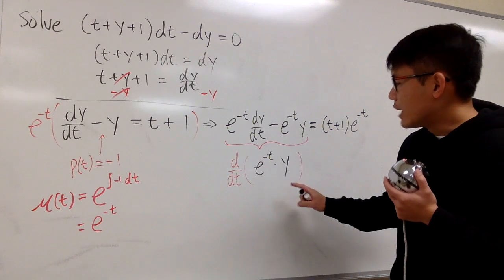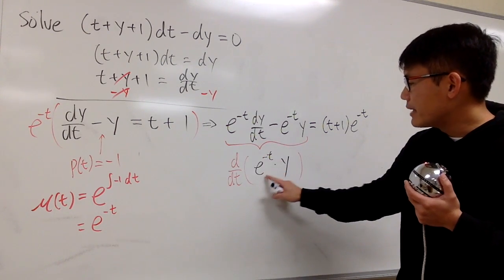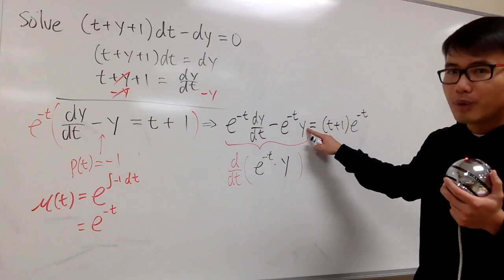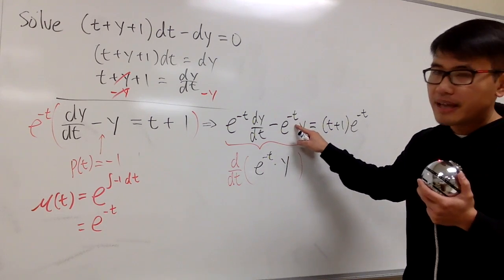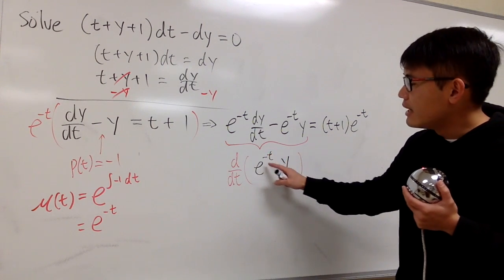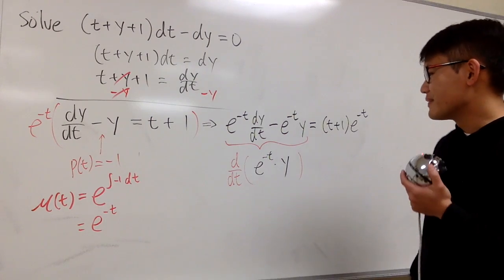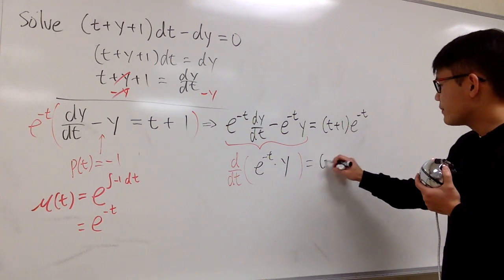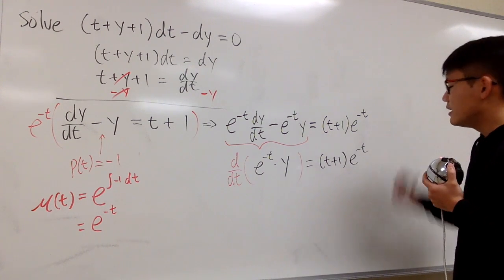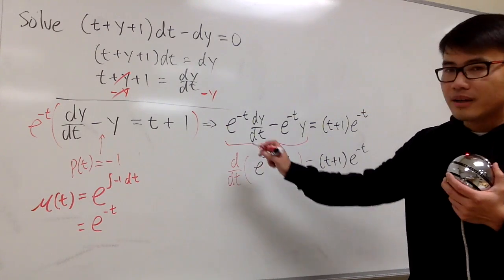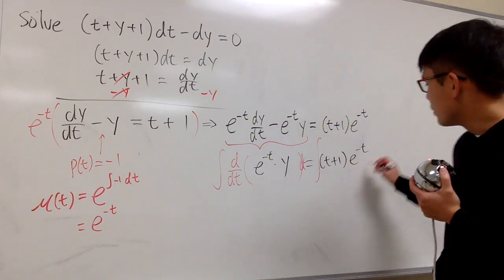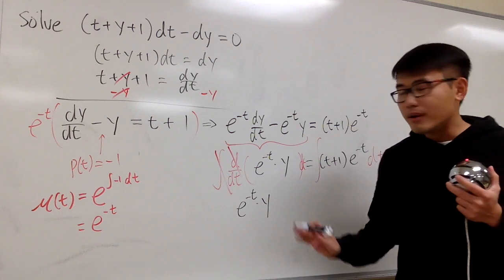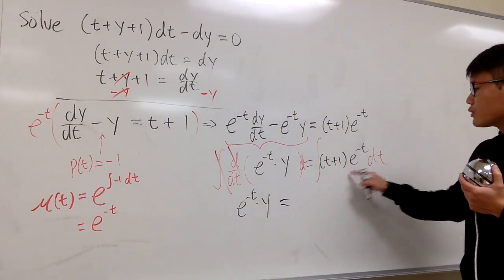Do a quick check: the derivative of e^(−t)·y using the product rule — keep the first function and multiply by dy/dt, then add the second function times the derivative of the first. The derivative of e^(−t) by chain rule gives negative e^(−t), which makes it negative. So the left side is forced to be the derivative of a product. We then integrate both sides, so the left side gives us e^(−t) times y — don't worry about the plus c — and this equals the integral of (t plus 1) e^(−t).